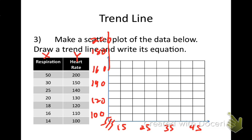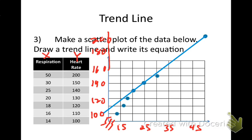Now plotting points: 50 and 200 is about there; 30 and 150; 25 and 140; 20 and 130; 18 and 120; 16 and 110; and 14 and 100. Looking at that scatter plot — what type of correlation would that be? That's a positive correlation. Now I'll draw my trend line, and it looks like I actually hit about three points — that's a pretty good trend line.